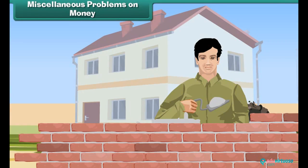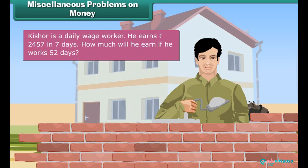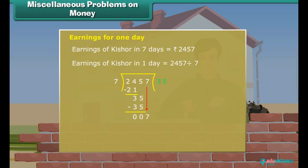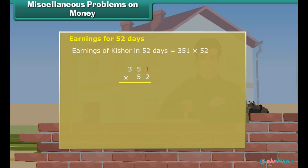Now let us apply both concepts together in solving money problems. Kishore is a daily wage worker. He earns 2,457 rupees in 7 days. How much will he earn if he works 52 days? First, we work out the earnings for one day: 2,457 divided by 7 equals 351 rupees. Now, earnings for 52 days is 351 × 52, which equals 18,252. Therefore, Kishore will earn 18,252 rupees in 52 days.